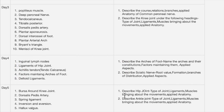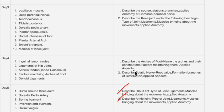For day five, the first question is hip joint — it's a very important question. Ankle joint is also important. Don't skip these joints: shoulder joint, hip joint, knee joint, ankle joint, wrist joint, elbow joint, and first carpometacarpal joint — all these joints are very important.